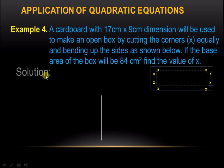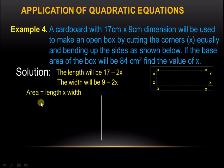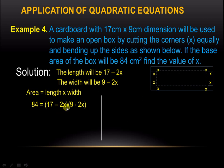The length will become 17 minus 2x because we remove the cut corners on both ends, giving us minus 2x. The width follows the same process — we subtract 2x. Since it's a rectangle, we use the area formula: 84 equals (17 minus 2x) times (9 minus 2x).